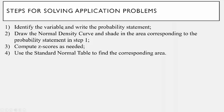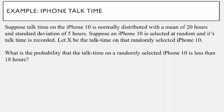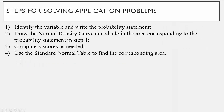The first thing you're going to do is identify the variable and write the probability statement. Here, what is the probability that the talk time is less than 18 hours? So we let the random variable X be equal to the talk time on a randomly selected iPhone X, and we want to find the probability that that talk time is less than 18 hours. That's step one — identify the variable, which we did as X, and then write the probability statement.